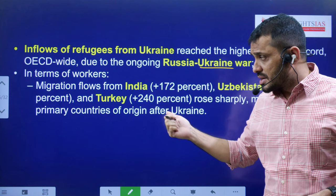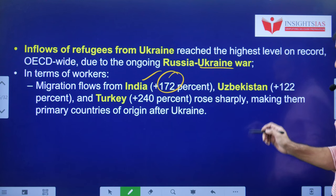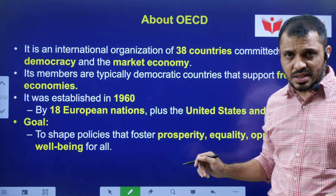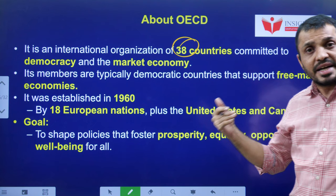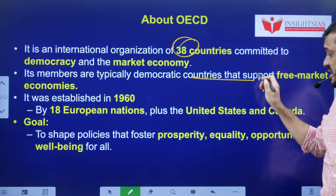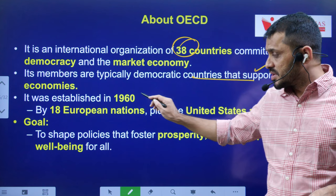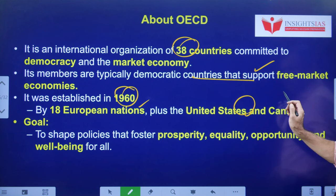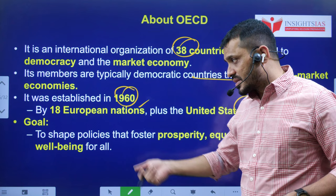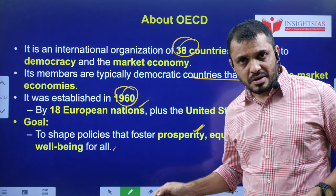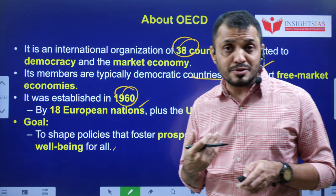In terms of worker migration to OECD, India saw an increase of around 172%, Uzbekistan 122%, and Turkey also ranked high. About OECD: it is a group of around 38 countries whose main idea is supporting democracy and market economy. These are mainly democratic countries that support free market economy — not much related to socialist or communist economies. It was formed in 1960 by around 18 European nations plus the US and Canada. The main goal is to help each other in terms of prosperity, equality, opportunity, and well-being for all.